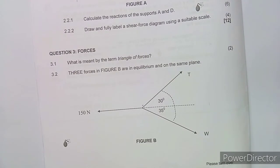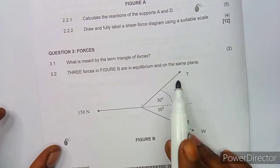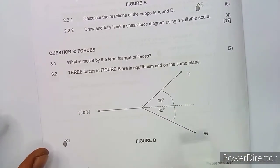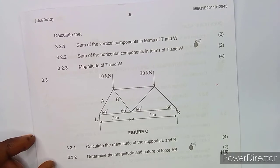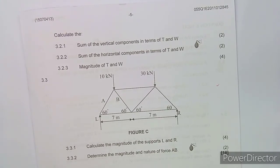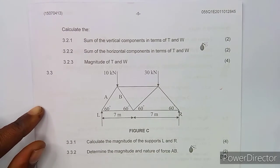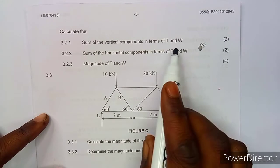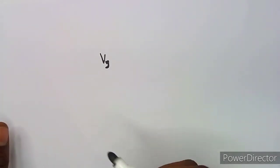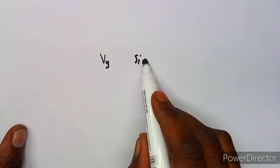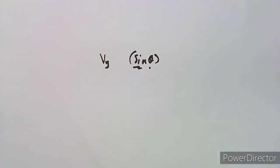Moving on to another question — we are given that three forces in Figure B are in equilibrium and on the same plane. We are asked to calculate the sum of the vertical components in terms of T and W. The sum of the vertical components is represented by Vy, and these use sine theta.